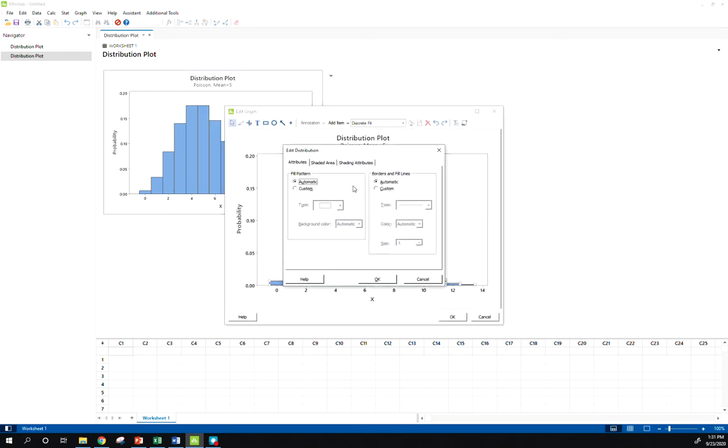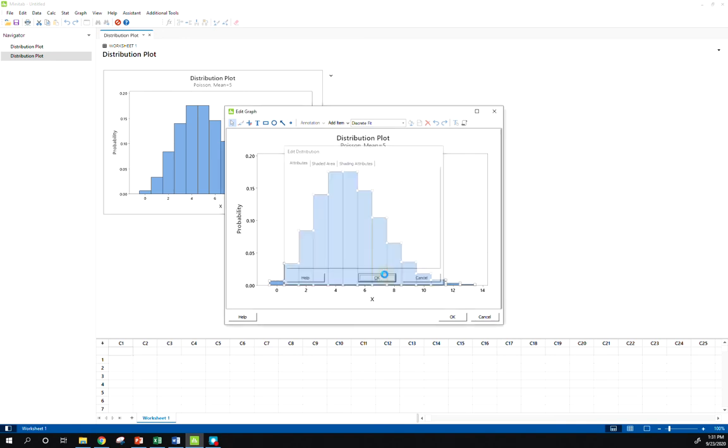Now if I want to shade a specific area, we can double click on that, bring up our options here for shaded area. Remember we wanted less than three, which is the same as less than or equal to two. So less than is the left tail, put in two, and now I can visualize this probability that I've been finding.